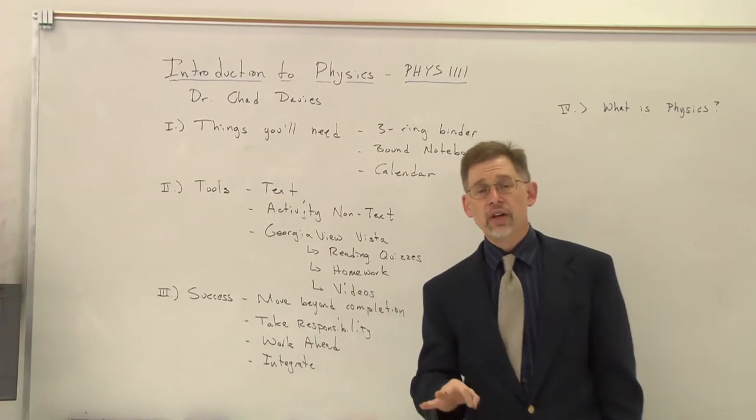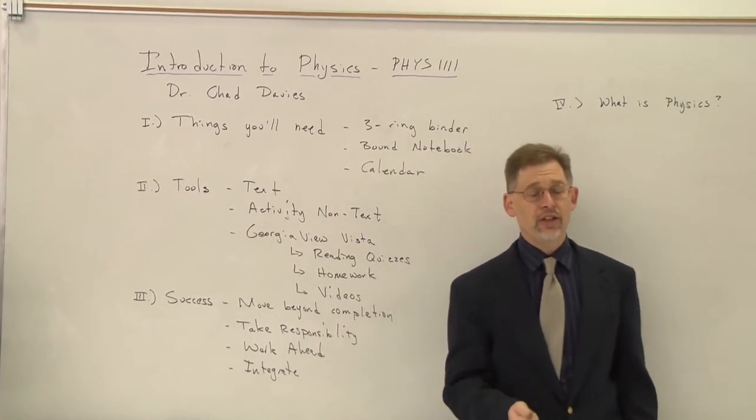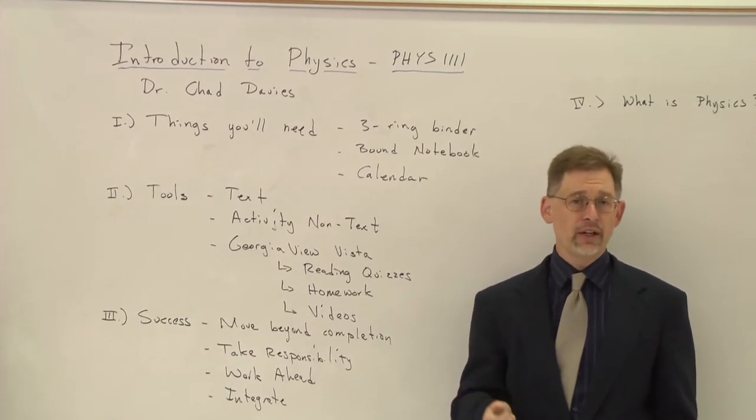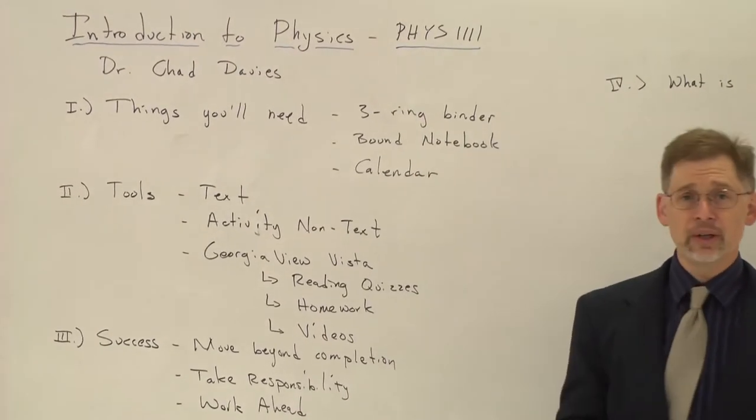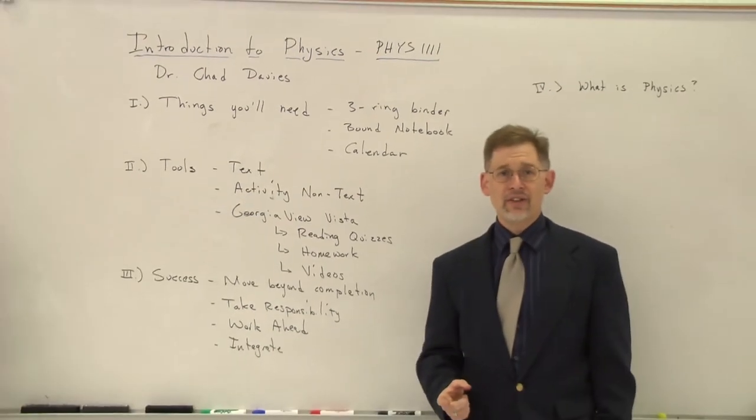Now, there's going to be three things to start off with. Probably the most important thing that you're going to need, and this is true for almost any class you take in college, you're going to need some way to stay organized, and the best way to do that is with a three-ring binder. Get yourself a two-inch three-ring binder. You're going to bring it to class every day.